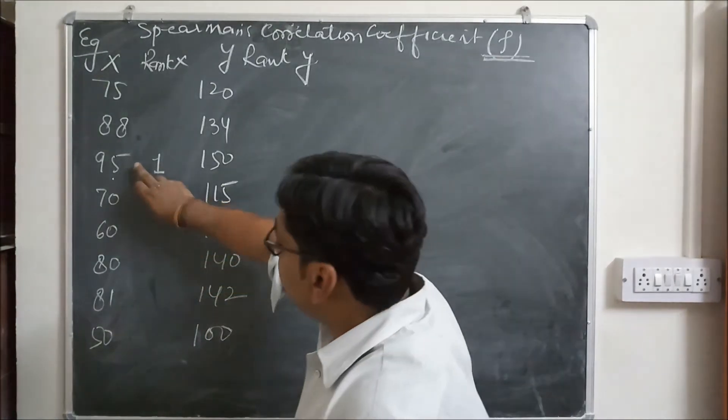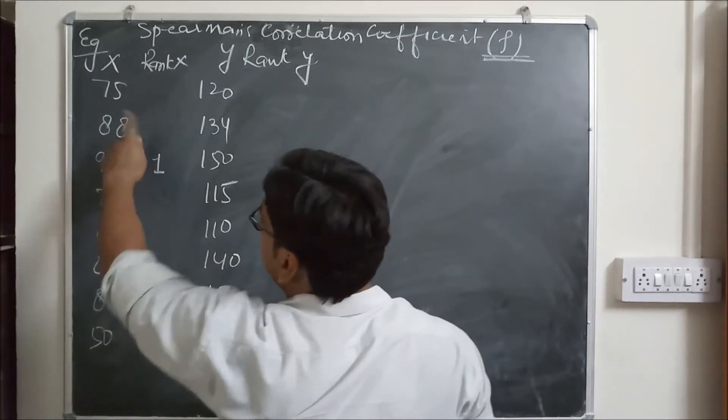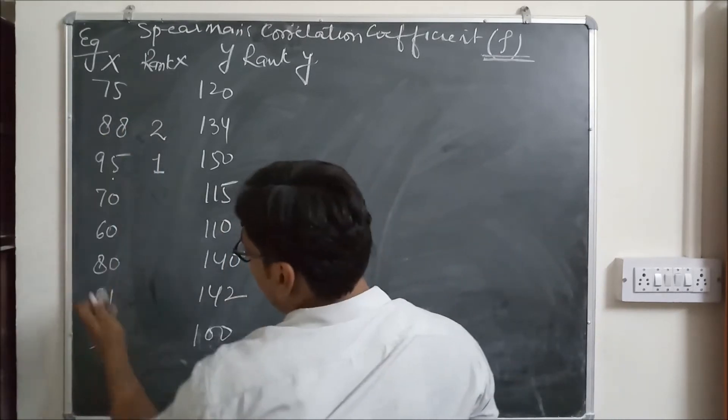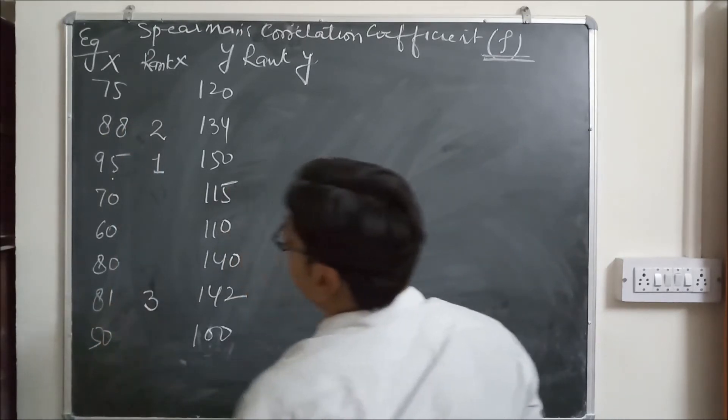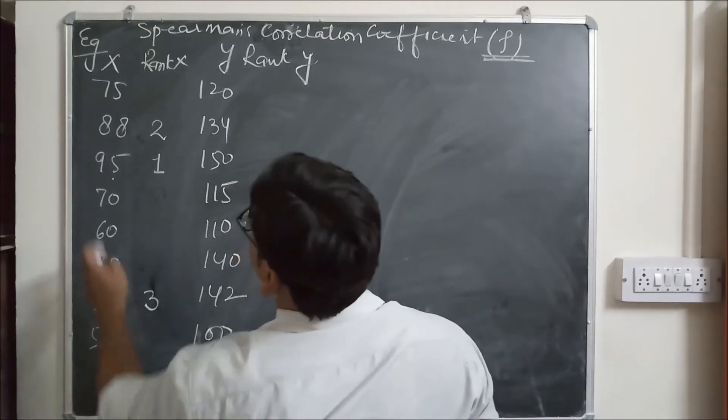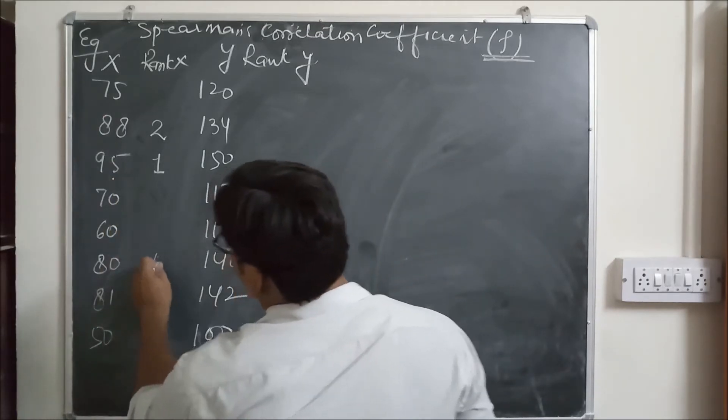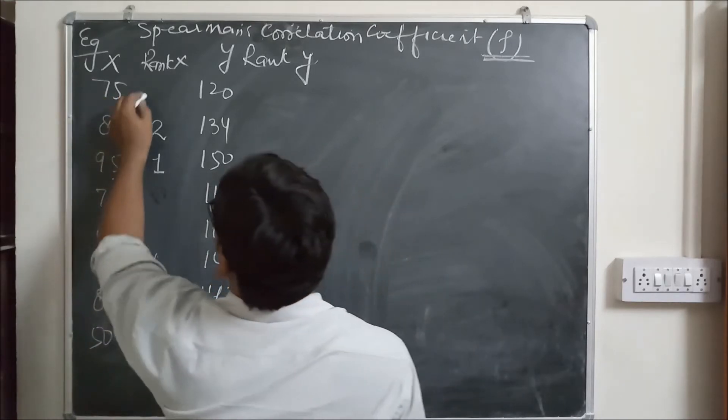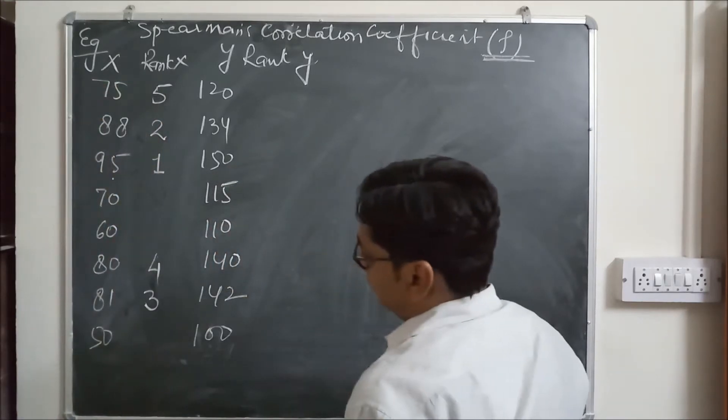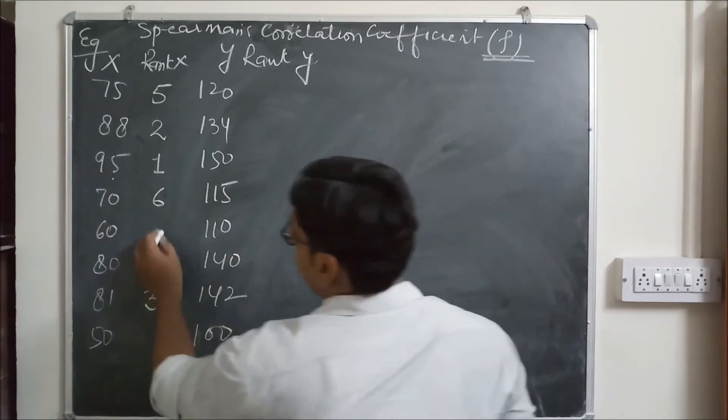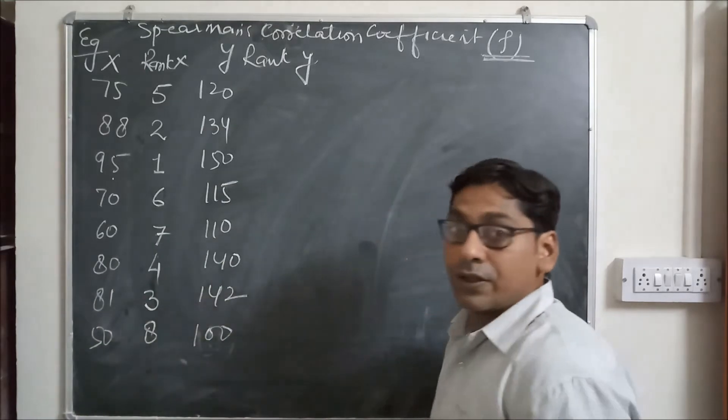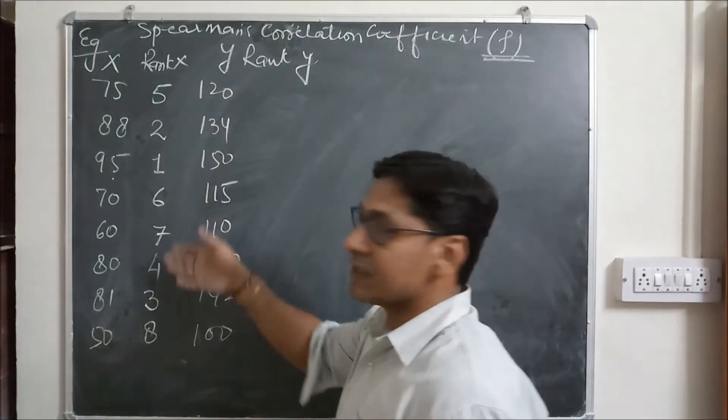Then 88 is the second highest, we give it 2. Then 81 is 3, then 80 is 4, then 75 is 5, then 70 is 6, then 60 is 7, and 50 is 8. In this way the rank is given.